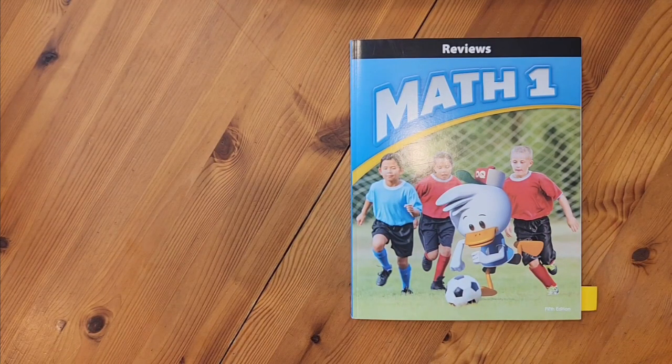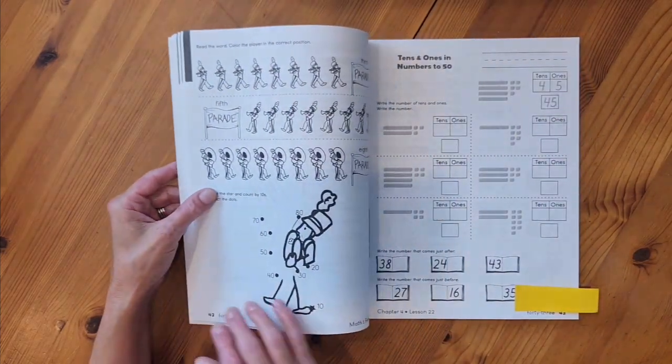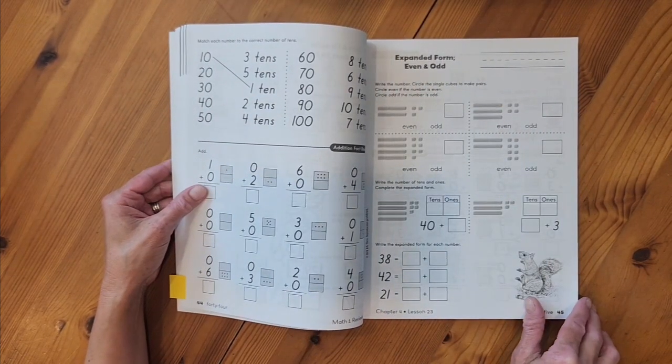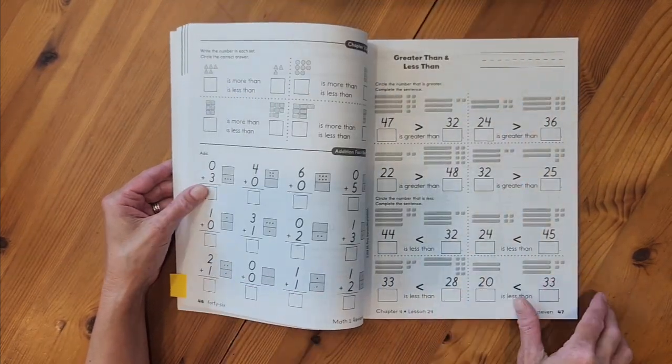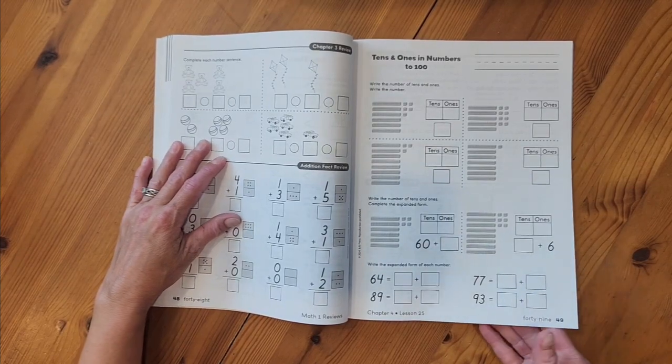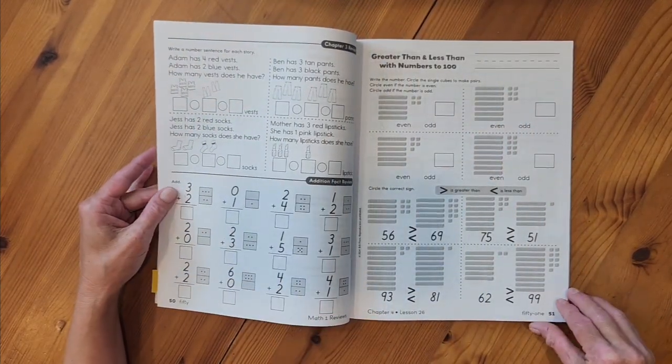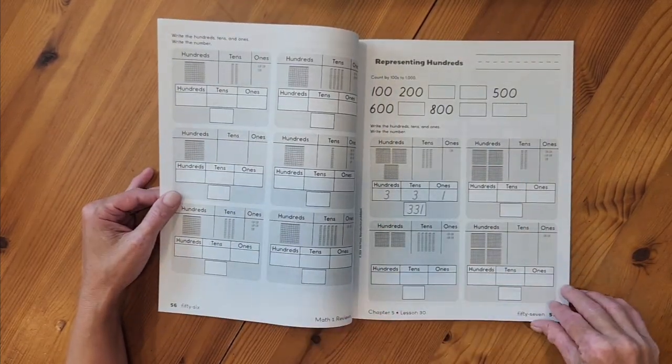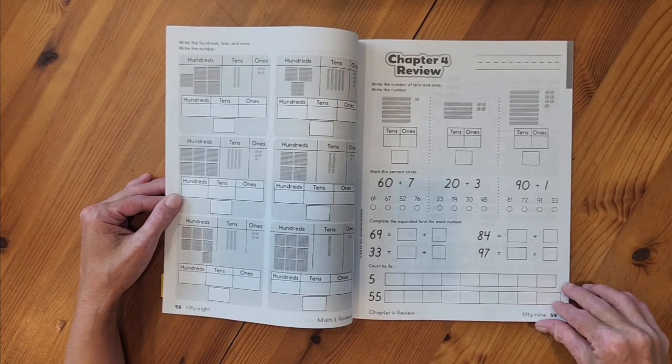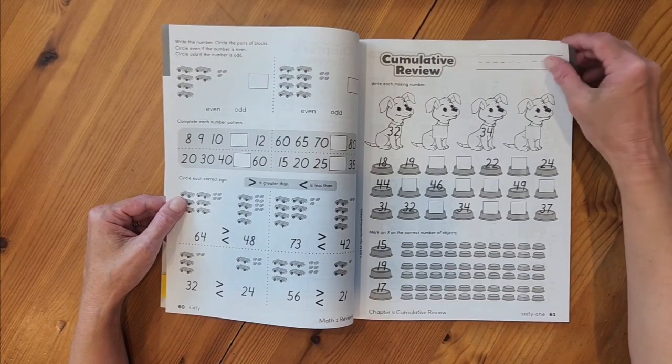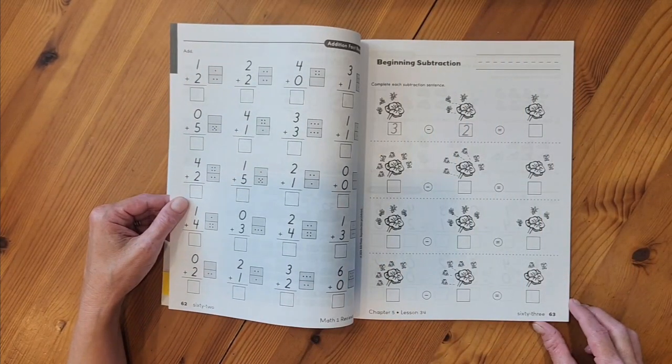So this is the Math 1 reviews book. So if you needed extra practice this is where you would go to get it. This is also set up similar to the work text where you'd have one page front and back that you could assign each day. This book also does have the perforated edge so you could easily tear these pages out if you wanted to. And then here's our chapter four review and our cumulative review. And then that would begin our chapter five pages.